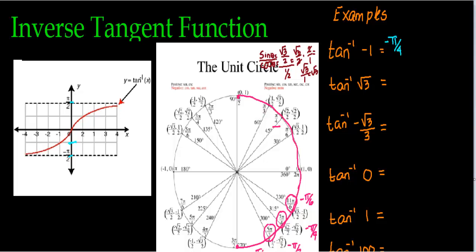Since it's positive, we are in the first quadrant. If it said negative square root of three, then we'd go to the fourth quadrant and the answer would be negative pi thirds. So this answer is pi thirds.